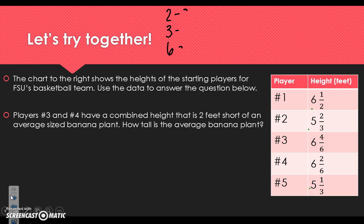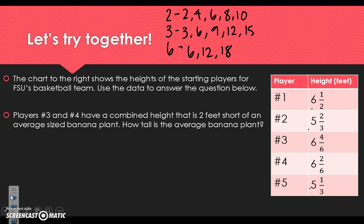Let's go ahead and figure out multiples for 2, 3, and 6 in hopes of finding one they have in common. We'll list maybe 4 or 5 to see if we can find one sooner rather than later. Multiples of 2: 2, 4, 6, 8, 10. Multiples of 3: 3, 6, 9, 12, 15. Multiples of 6: 6, 12, 18, 24. I see 6 in all three of them right there.